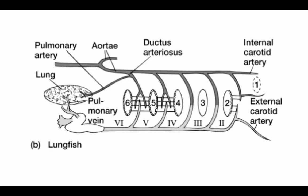Let's take a look at the simplest, most ancestral form of this two-circuit system: the lungfish. Starting at the heart and going into the ventral aorta — the first aortic arch is completely lost. The second bears a gill but also gives rise to the external carotid artery from the ventral aorta and the internal carotid artery from the dorsal aorta. The third and fourth aortic arches have lost their gills and are direct routes from the ventral aorta straight into the dorsal aorta. The fifth and sixth aortic arches both bear gills, and in gill-breathing mode blood is directed to these gill-bearing arches.